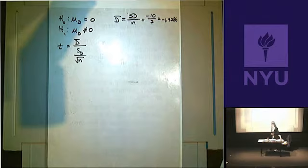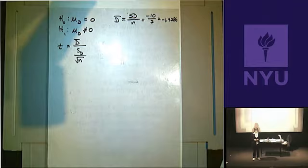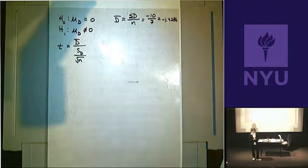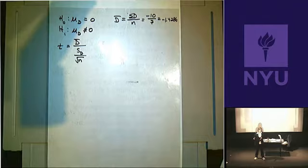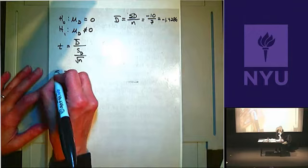The fact that the mean of the d scores is negative tells us that the first set of scores is lower than the second set of scores. Now we need to get the standard deviation of the difference scores.